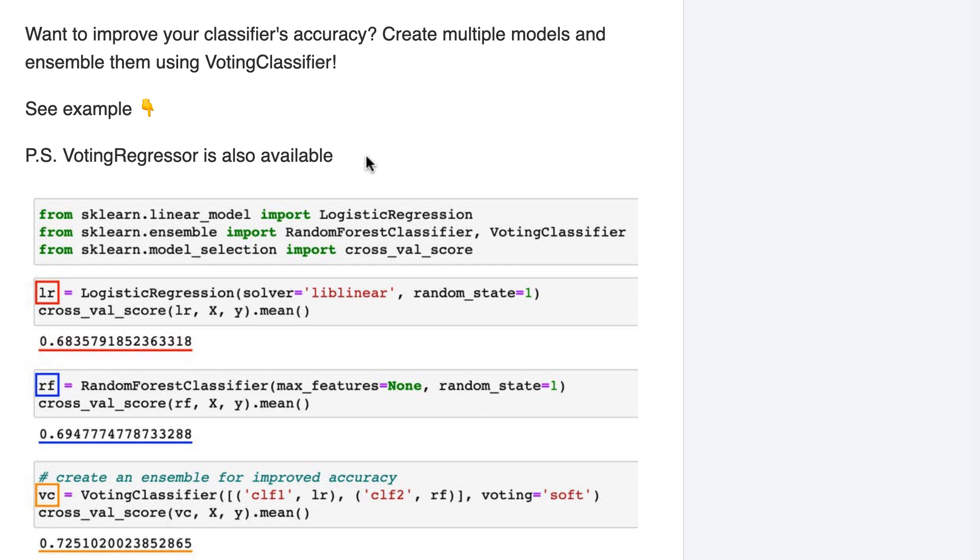Second, you may be able to improve the accuracy of your ensemble even further by tuning the parameters of the ensemble itself using a grid search. And that is the topic of the next tip, which is tip 47.